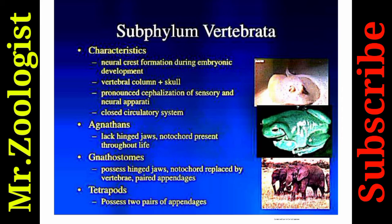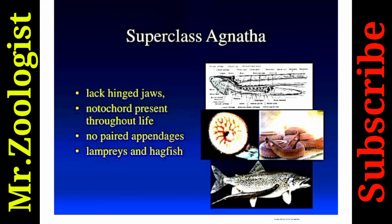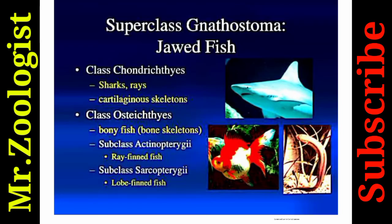Vertebrates have a vertebral column plus skull, pronounced specialization of sensory and neural apparatus, and a closed circulatory system. The notochord is replaced by the vertebral column in most; hinged jaws and paired appendages are present — tetrapods possess two pairs of appendages. Superclass Agnatha lack jaws, notochord is present throughout life, no paired appendages — examples are lampreys and hagfishes. Superclass Gnathostomata includes jawed fishes: Class Chondrichthyes (sharks, rays — cartilaginous skeleton) and Class Osteichthyes (bony fishes), with Subclass Actinopterygii (ray-finned fishes) and Subclass Sarcopterygii (lobe-finned fishes).